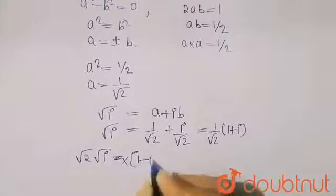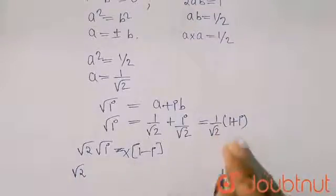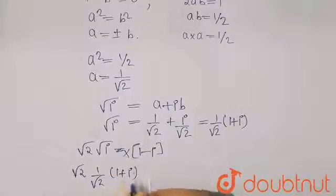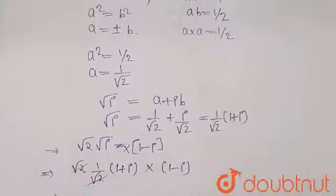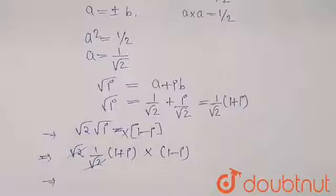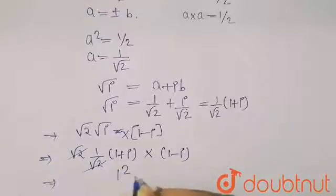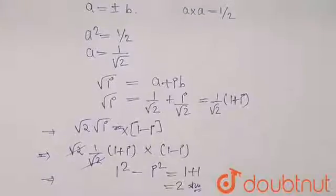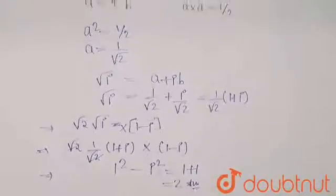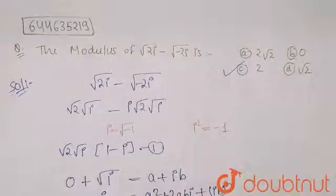Substituting: √2 · (1/√2)(1 + i) · (1 − i). The √2 and 1/√2 cancel. Applying the (a+b)(a−b) = a² − b² formula: (1 + i)(1 − i) = 1² − i² = 1 − (−1) = 2. So the answer is 2, which corresponds to option C.